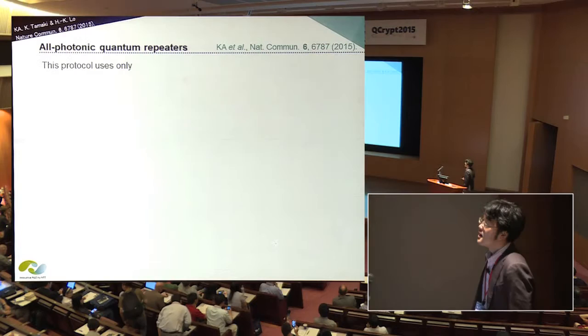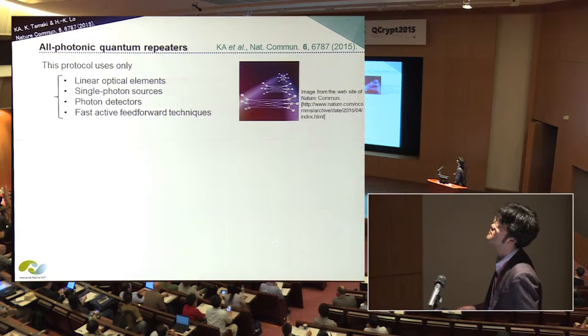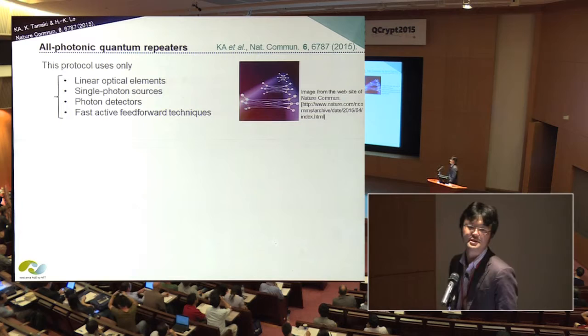My main message of this talk is just that I would like to exclude the necessity of matter quantum memory in the quantum repeaters. More precisely, our protocol just uses optical devices such as linear optical elements, single photon sources, photon detectors, and fast active feed-forward techniques. That's it. We do not need to use matter quantum memory at all.